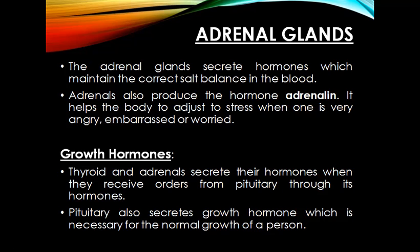The thyroid and adrenal glands secrete their hormones when they receive orders from the pituitary gland through its own hormones. Along with these, the pituitary also secretes growth hormone, which is necessary for the normal growth of a person.